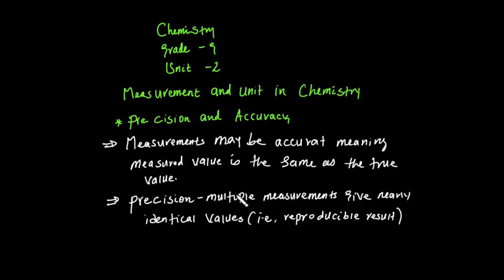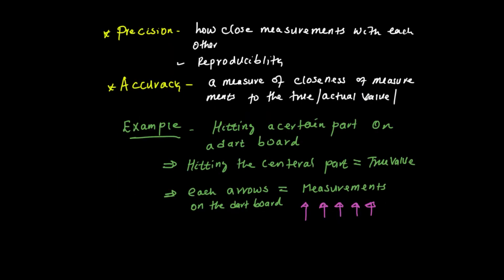Precision refers to how identifiable and repeatable the values are — they are very close to one another, nearly the same each time. The precision is how close the measurements are to each other.